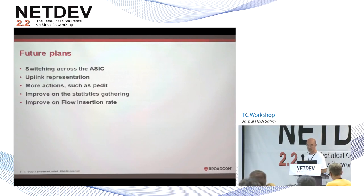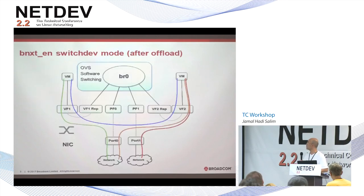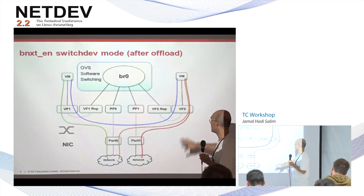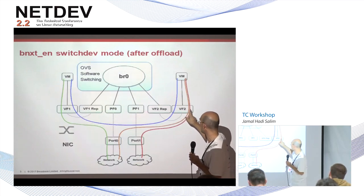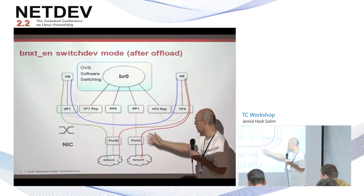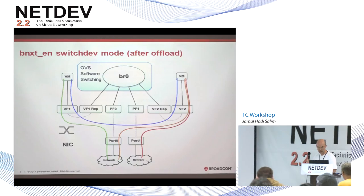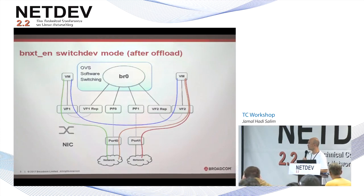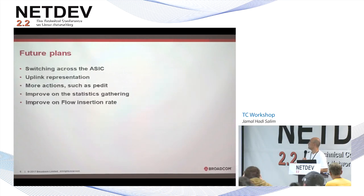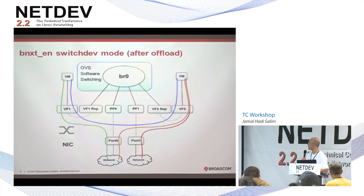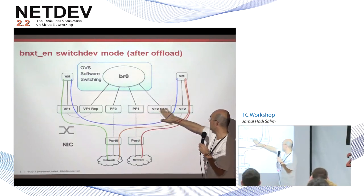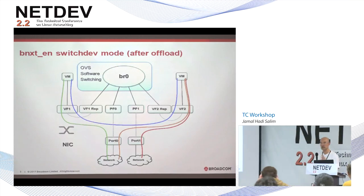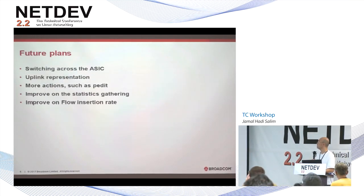Future plans: we want to be able to switch across the whole ASIC — a dual-port NIC, one chip — switching from any VF to any VF, from any VF to any port, not just the natural port it belongs to. We also need an uplink representation for the port, not just representatives for each VF. We'll look into that assuming it's the consensus.